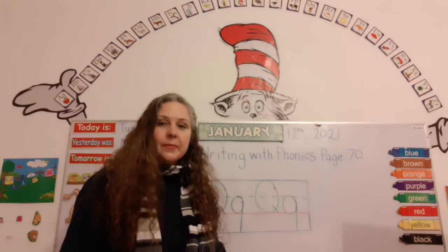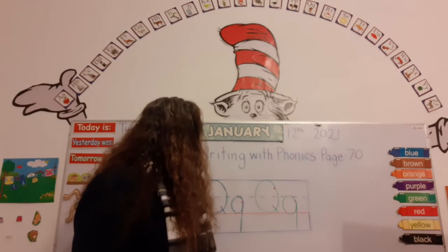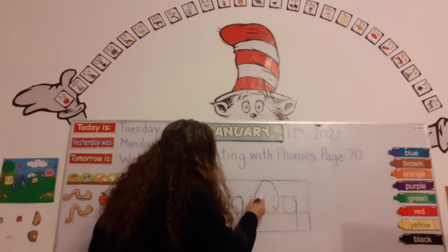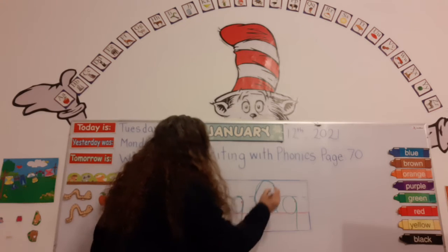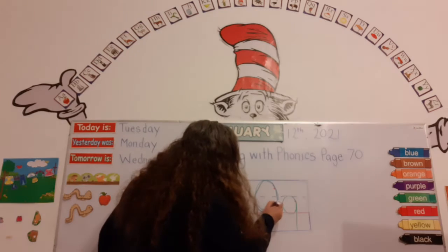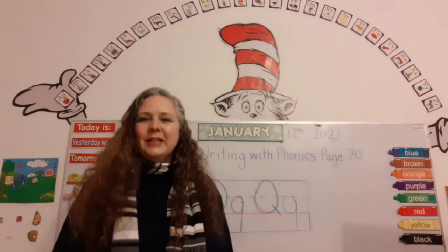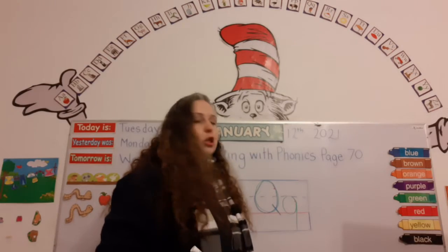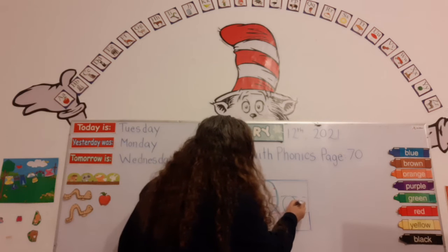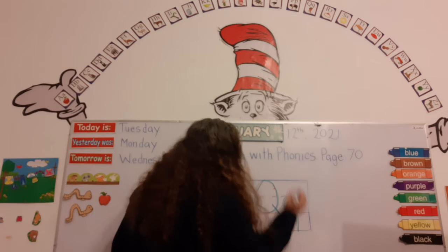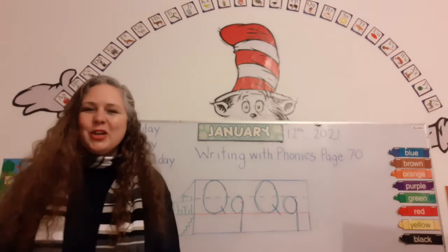Let's do it one more time. Here's the capital Q — it starts upstairs in the middle of the stairs, and we go all the way around into the downstairs. There's our O, and then we have to make it a Q, so we give it a little arm — number two — just like that. The queen. And here's the lowercase q: we start at the red dot in the middle of downstairs, go all the way around, and then give it a stick all the way down. That's the letter Q.